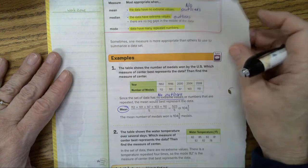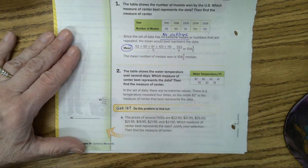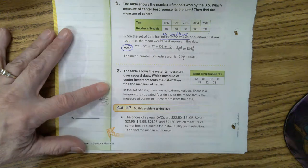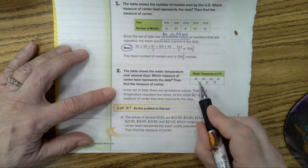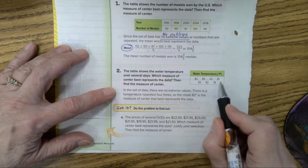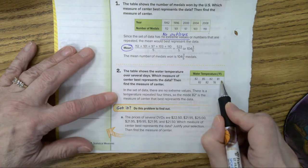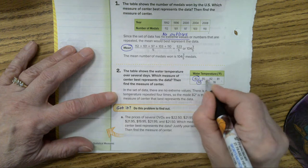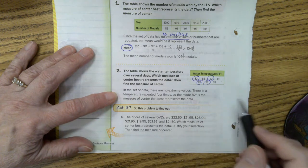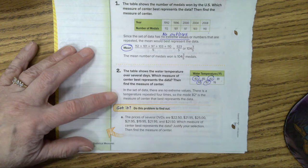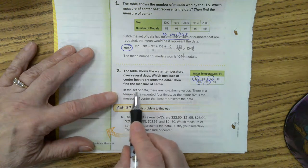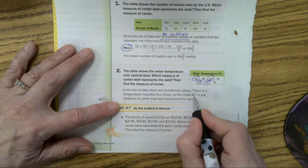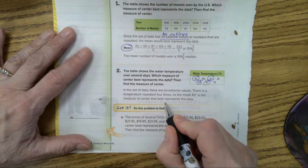Okay. Let's look at example two. The table shows the water temperature over several days. Which measure of center best represents the data? Then find the measure. So, let's look at it. 82, 82, 82, 82. Ooh. 85, 78, 81. Well, there are a whole lot of 82s, right? Since we have many 82s, it's more than half. When you have a value that's more than half of the data, you're going to use that to describe it. So, in the set of data, there are no extreme values. There is a temperature repeated four times. So, the mode 82 is the measure of center that best represents the data.